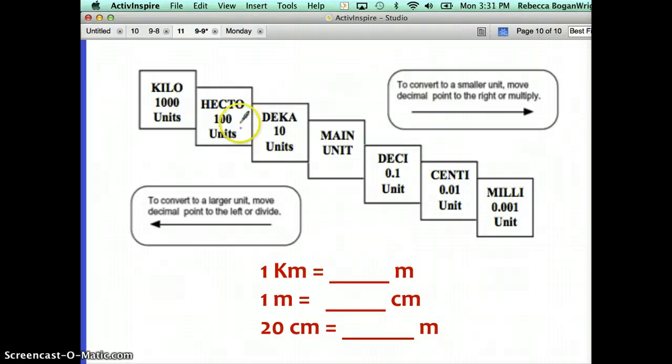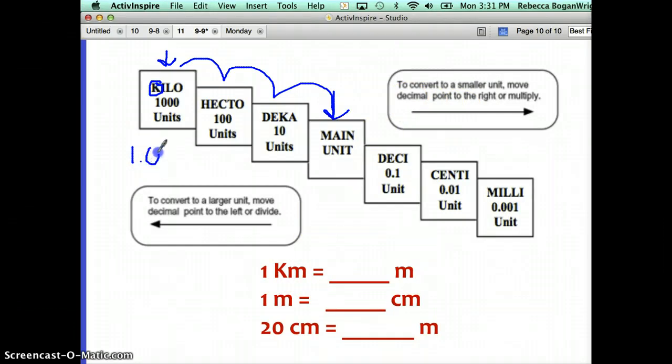For our first example, we're going to convert one kilometer to meters. That means we're starting up at letter K at the top of the staircase and moving down to the main unit meter. If you count how many places down we have moved, that's one, two, three. That means we are going to move the decimal point, which on the number one is right after the one, we're going to move that three places to the right. Basically what we've done is we've multiplied by a thousand. So one kilometer equals one thousand meters.